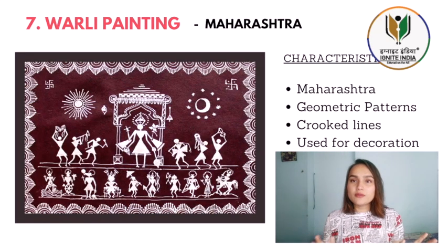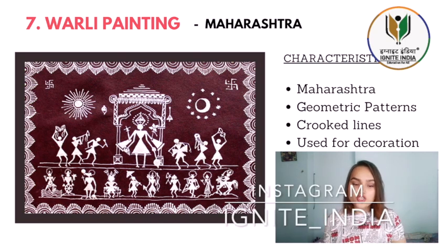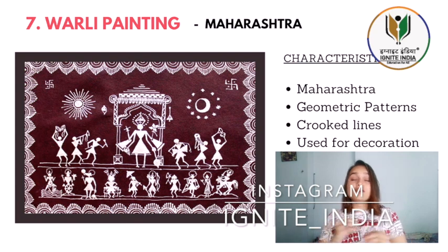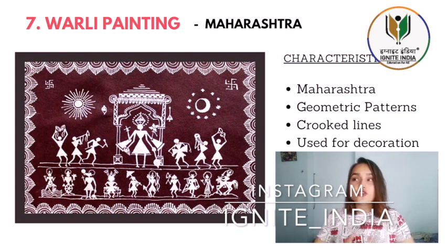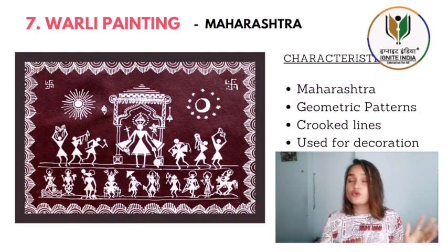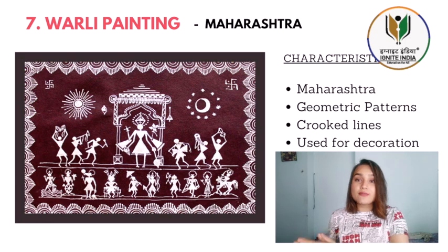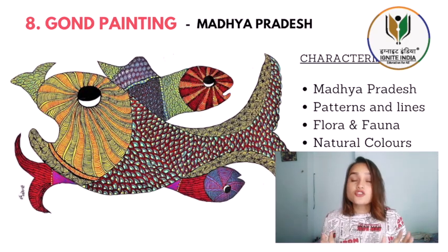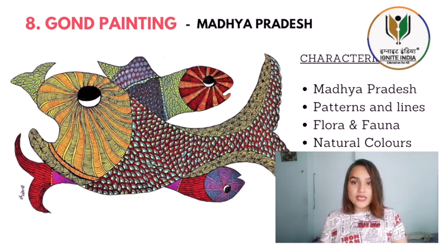Our second to last art form is Warli painting, from Maharashtra — again an important topic. It has geometric patterns and curved lines, not very straight lines. Earlier it was used for decoration, like if someone is getting married they would cover the walls of the house in Warli paintings. People still practice this and it looks amazing — it has contrast colors with white lines against a very dark background, which is how you can identify it.